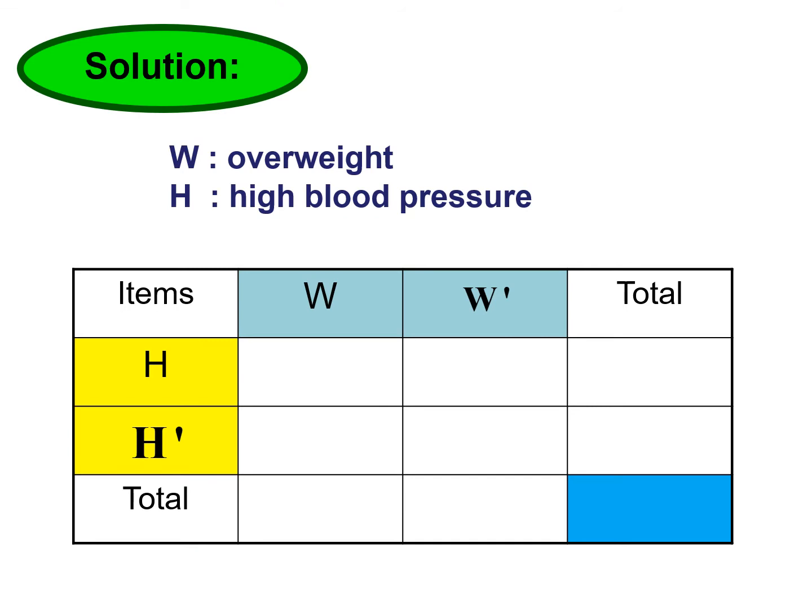To solve this question, we must draw a contingency table because they involve two items: W for overweight and H for high blood pressure. In the first row we put W for overweight, W prime for not overweight, then H for high blood pressure, and H prime for not having high blood pressure.